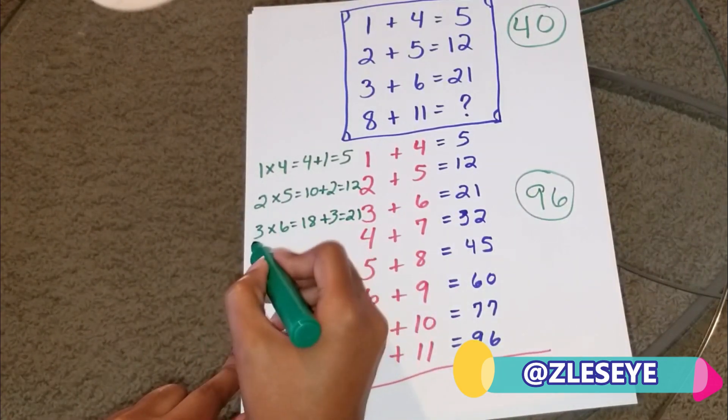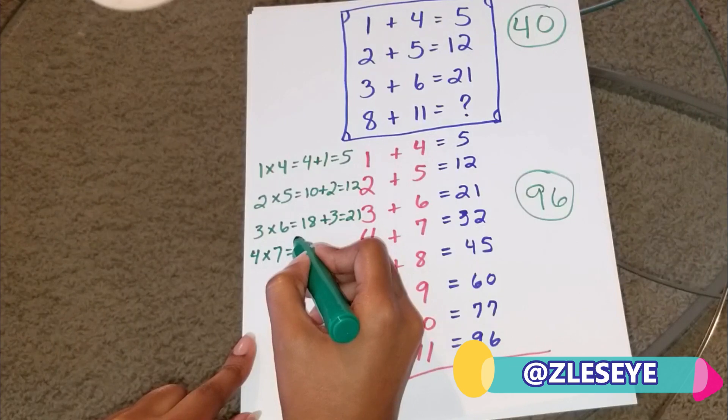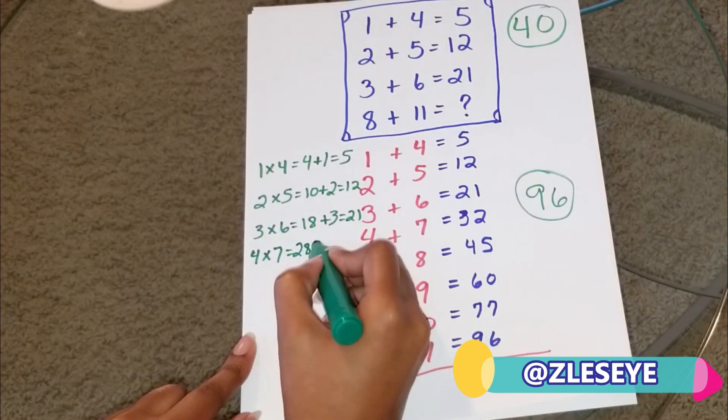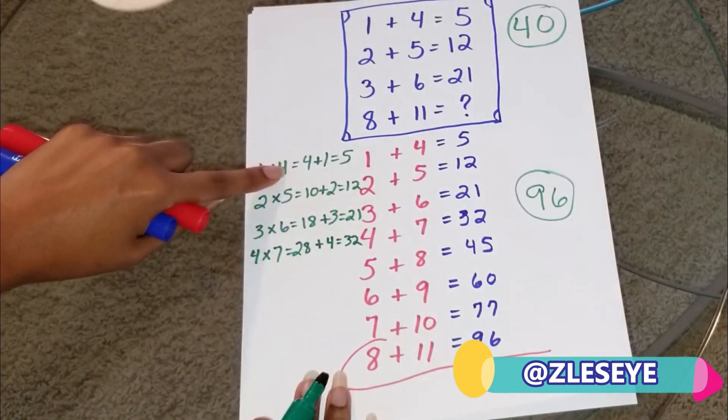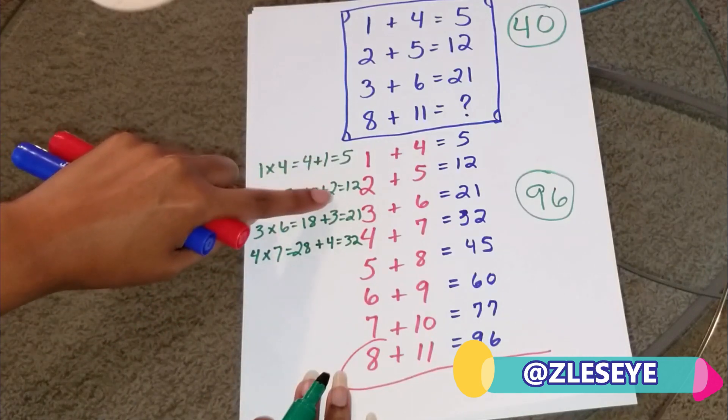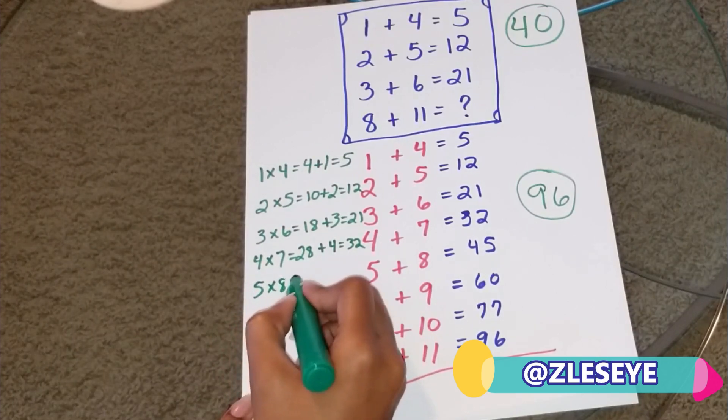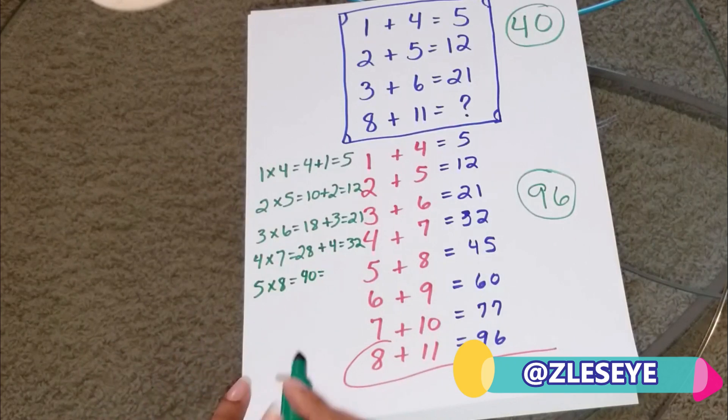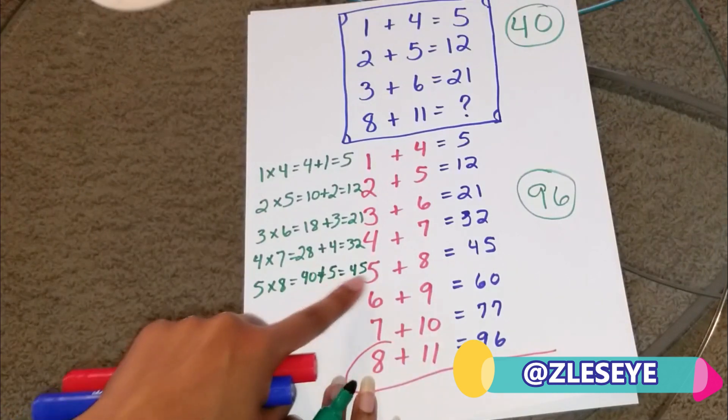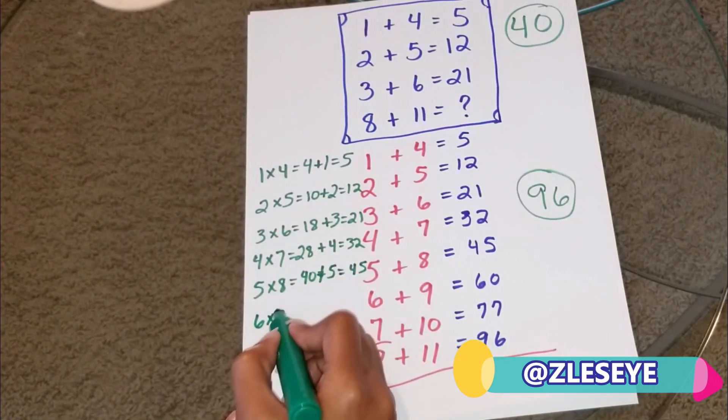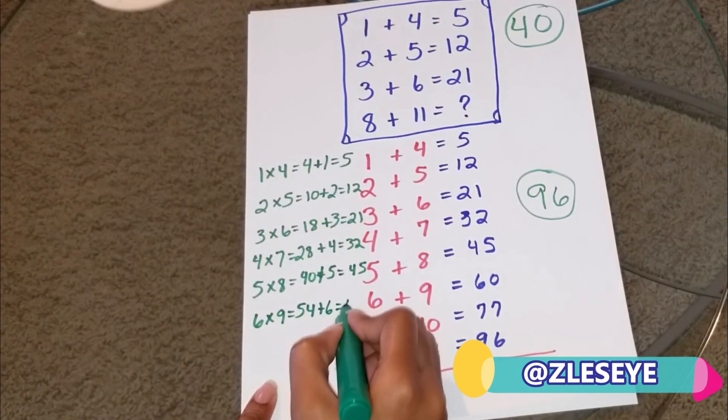And I know a lot of people get it now, but I'm going to be thorough for anybody who may not understand. 4 times 7 equals 28 plus 4 equals 32. You see? 1, 2, 3, 4. 4, 5, 6, 7. 1, 2, 3, 4. Do you see the pattern? 5 times 8 equals 40 plus 5 equals 45, right? Because we're adding the first addend. 6 times 9 equals 54 plus 6 equals 60.